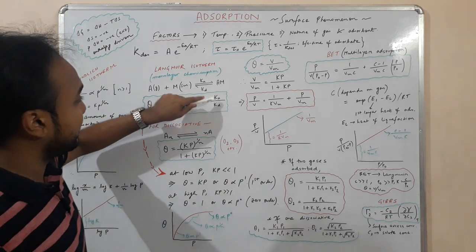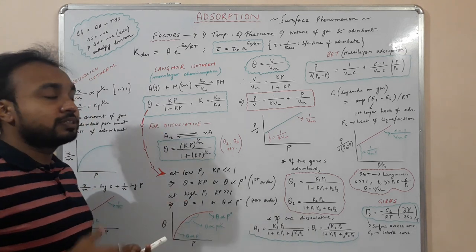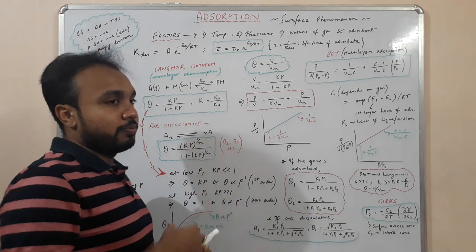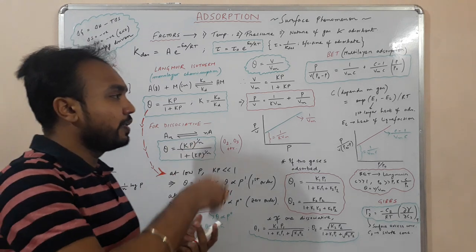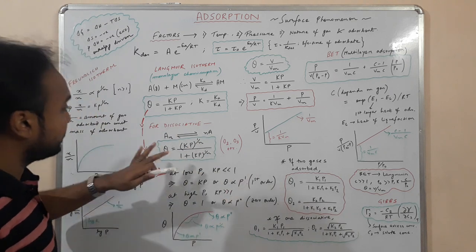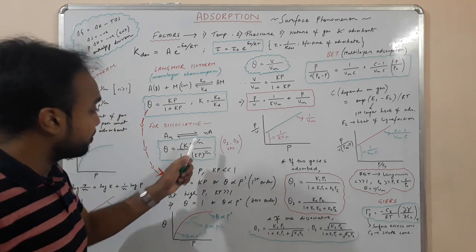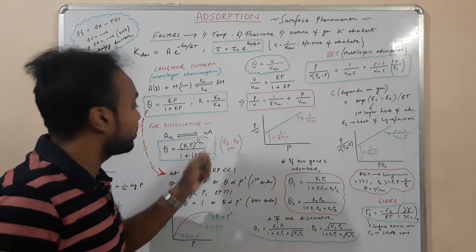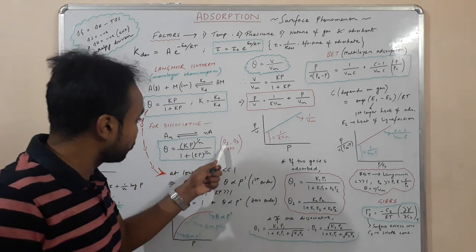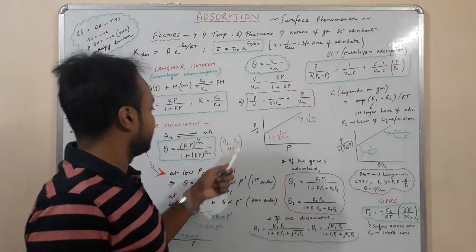If adsorption is dissociative — for example, O₂ dissociates into 2O — the general formula becomes: θ = (kP)^(1/n) / (1 + (kP)^(1/n)), where n is the number of atoms formed after dissociation. For O₂, n = 2, so the exponent is 1/2. For O₃, n = 3, so the exponent is 1/3.